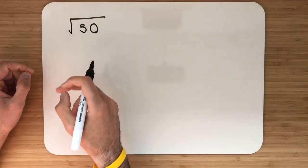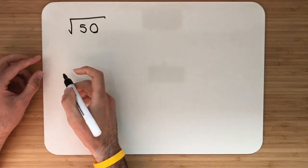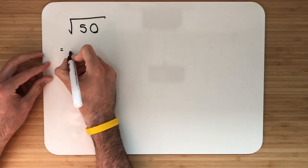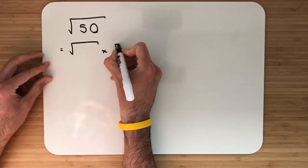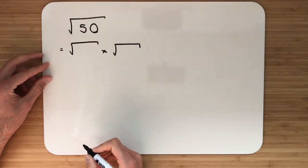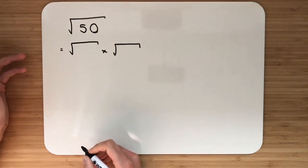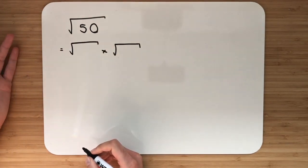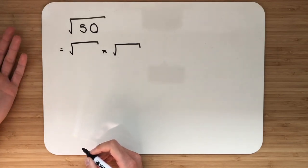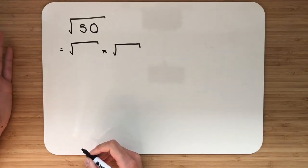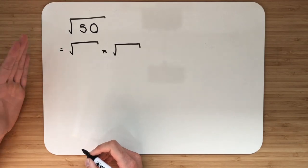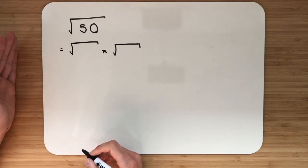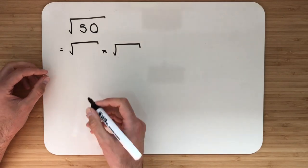Example 2: simplify root 50. We're looking for two numbers that multiply together to give me 50, where one has to be square. For the number 50, we're looking at 5 and 10, 50 and 1, or 25 and 2. Going through those options, the one with a square number involved has to be 25 and 2.